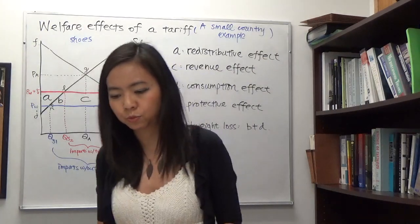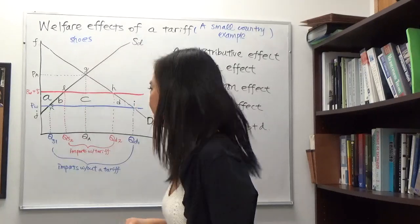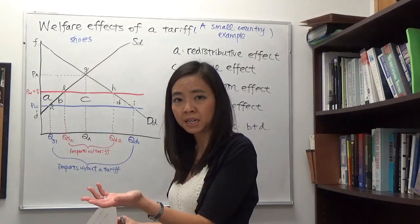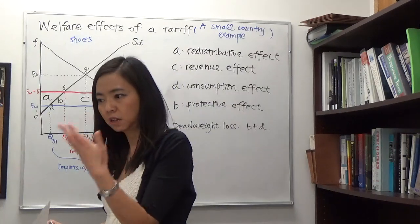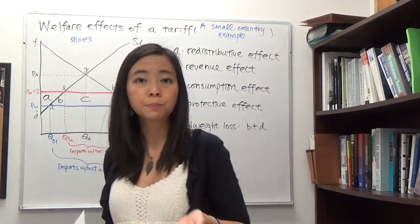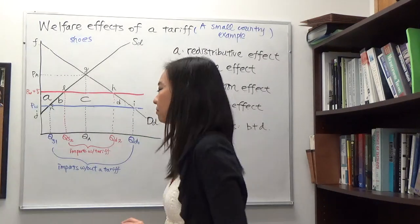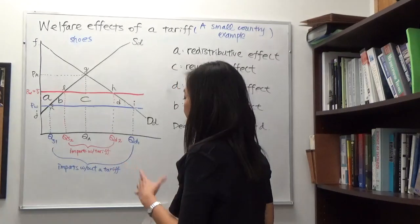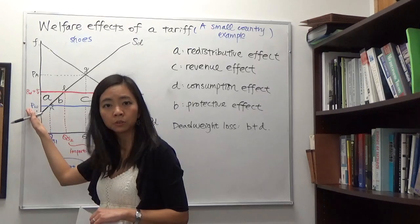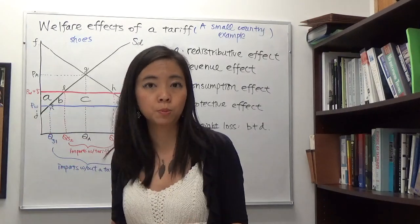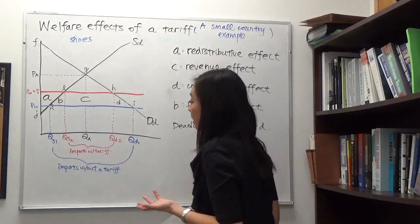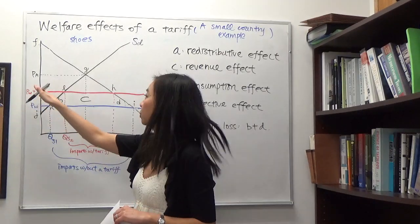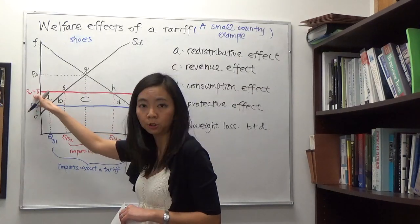Now suppose the government says it wants to protect local producers because their producer surplus has shrunk quite a bit, so it is going to impose a tariff. You can import, but for each unit you import, you also have to pay T dollars to the government. Remember, we are a small country — we are a price taker — so foreign producers will still sell at PW. Our local consumers will have to absorb 100% of the tariff, so the price of shoes increases from PW to PW plus T.